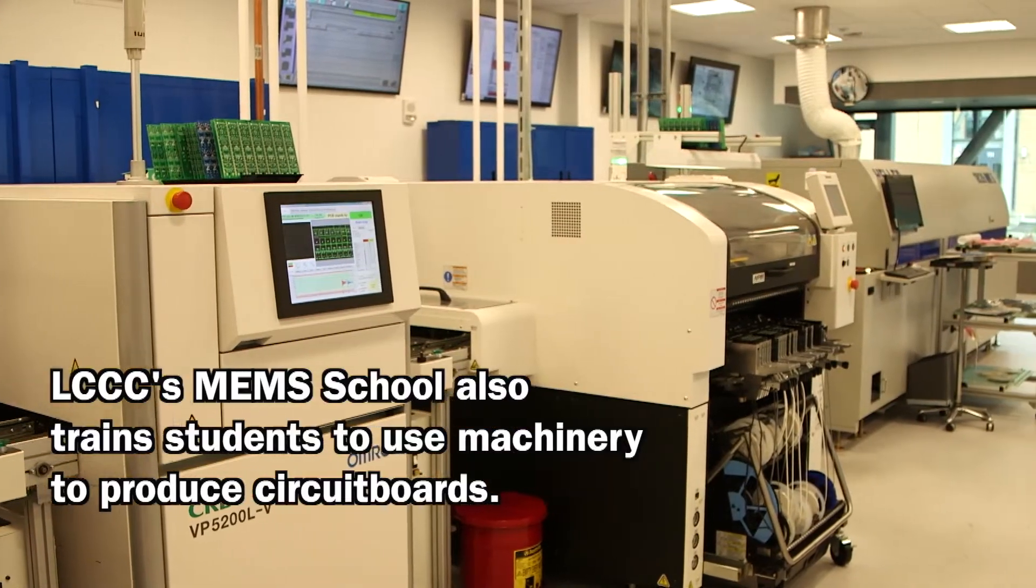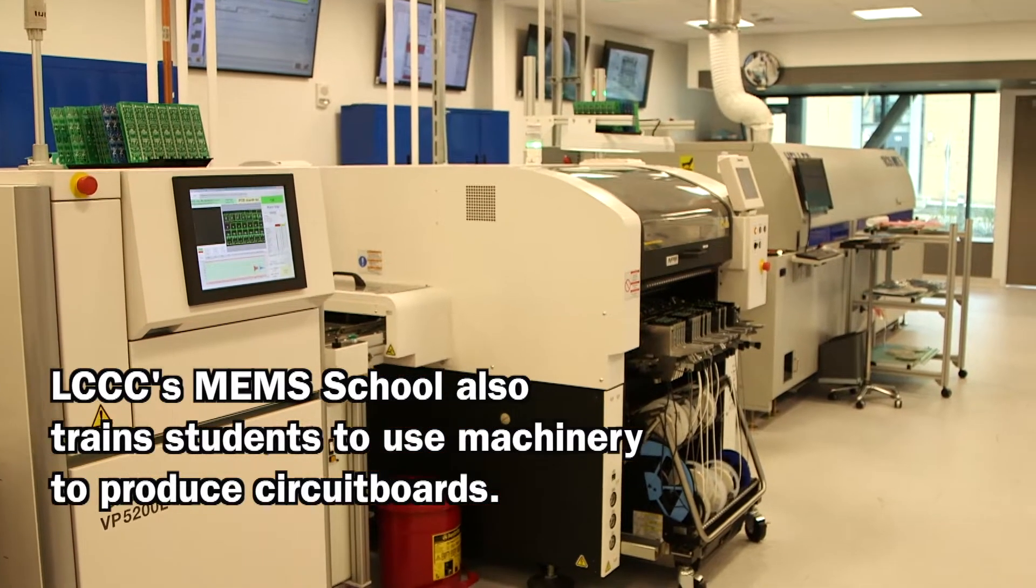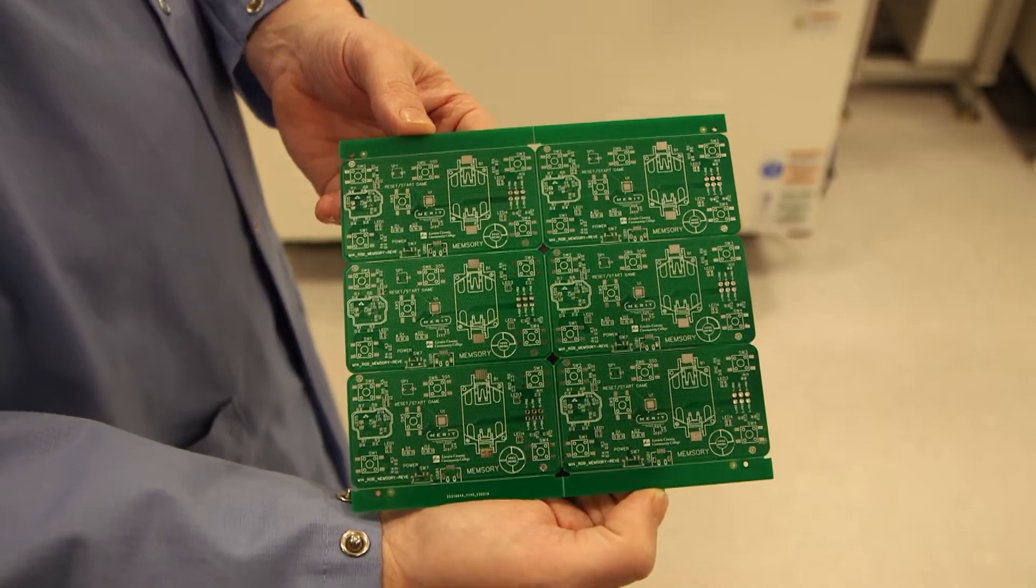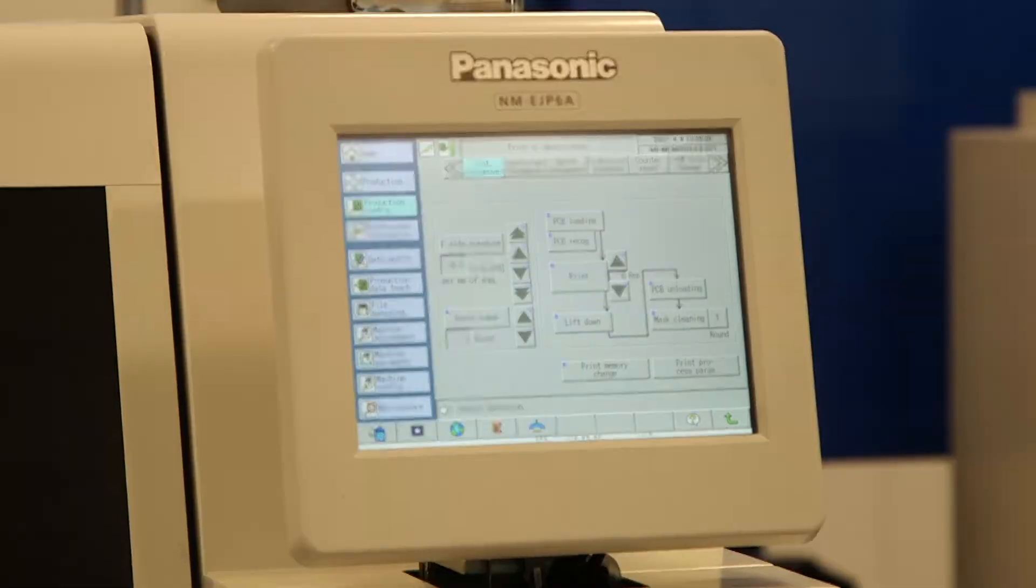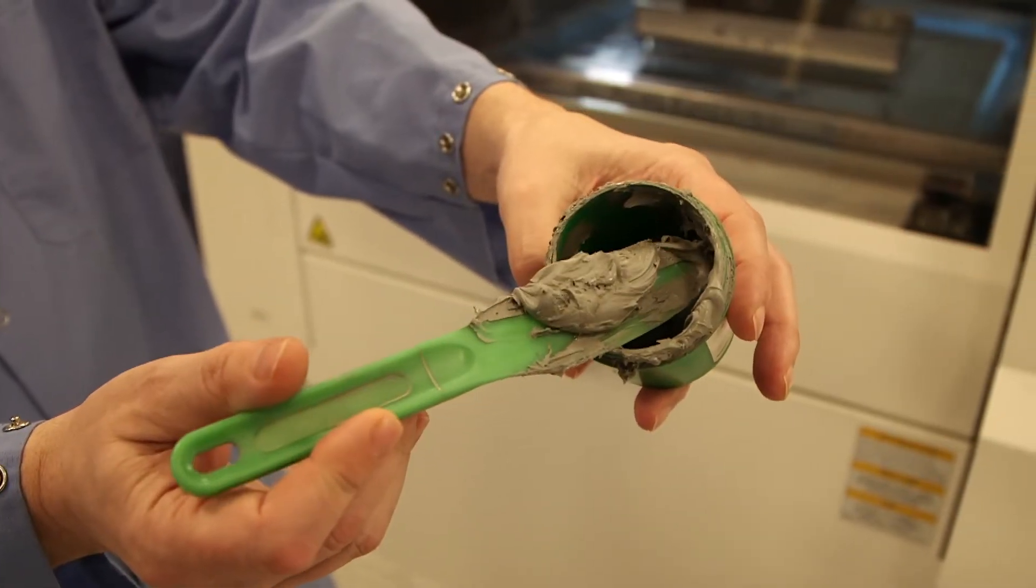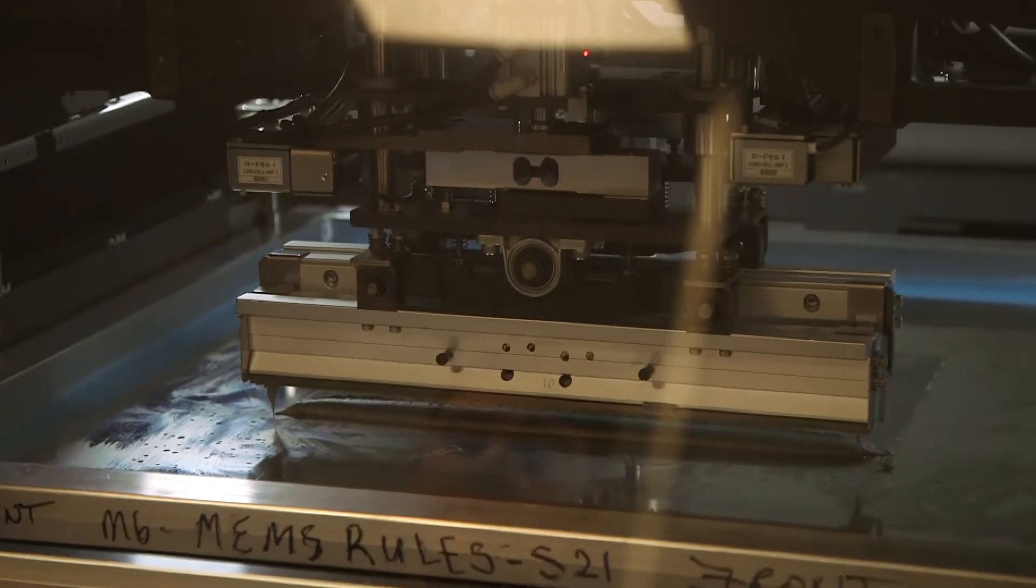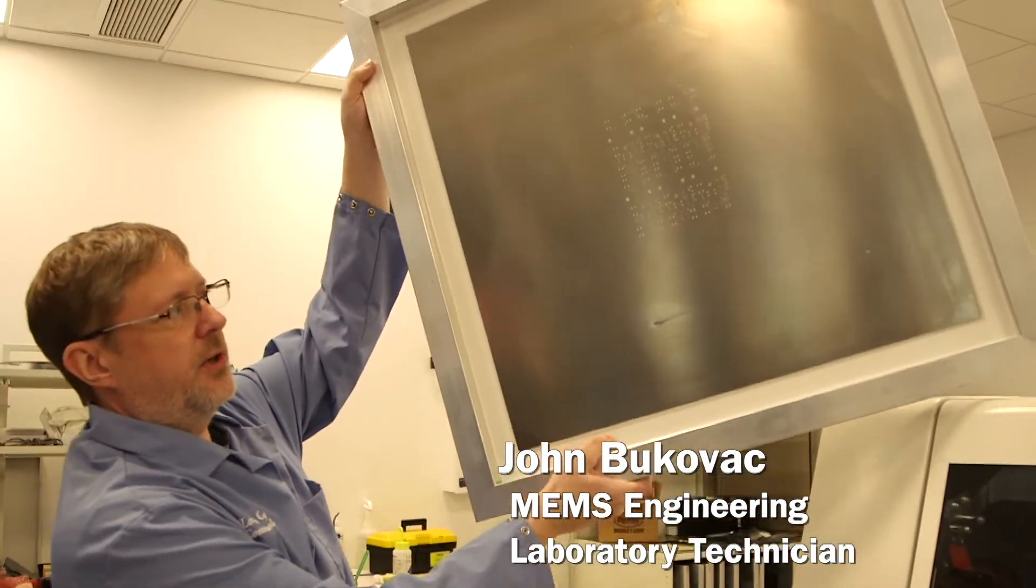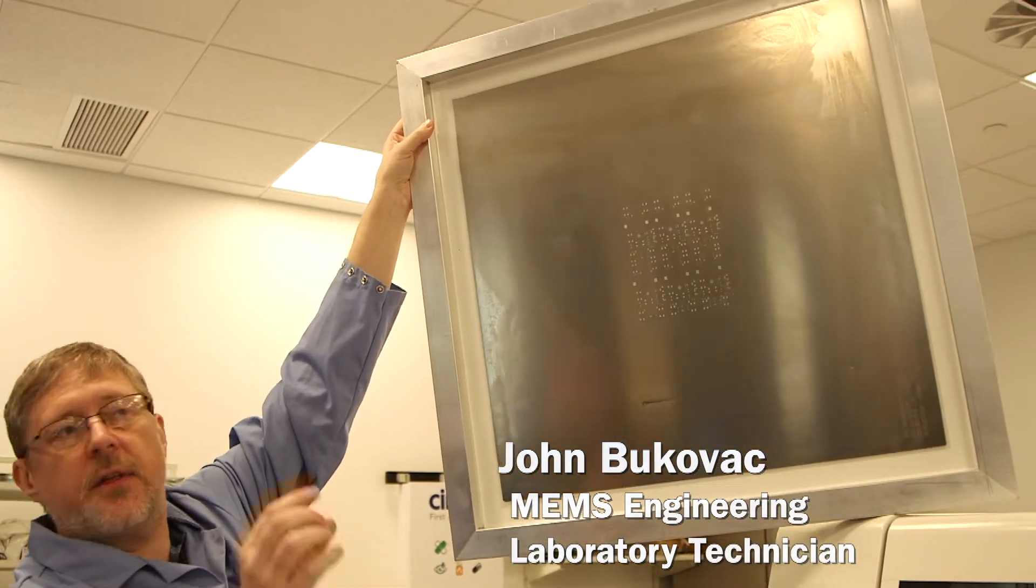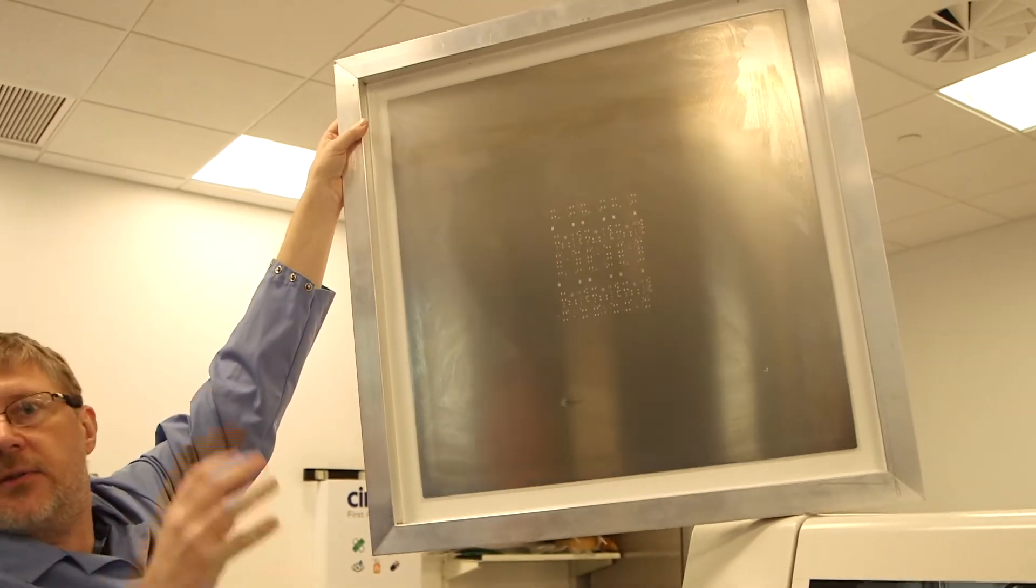You take the bare board like this. When we run it through these machines, it ends up and puts all the parts onto it and then solders them down. It's kind of like peanut butter. So we put that onto the screen here. So what we do is all those holes represent where solder is going to get placed down. And then the parts get put down on top of the solder and then it all melts together.